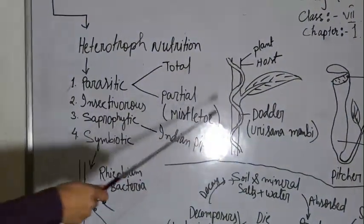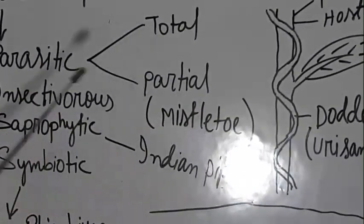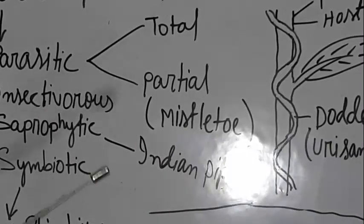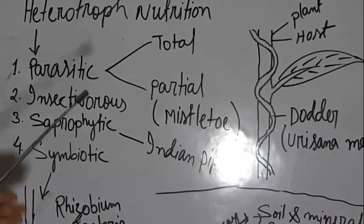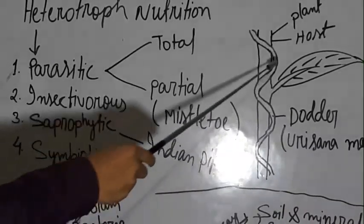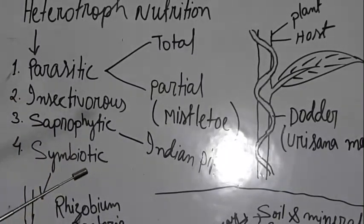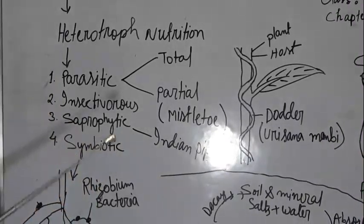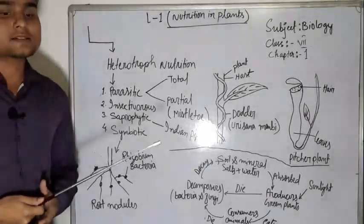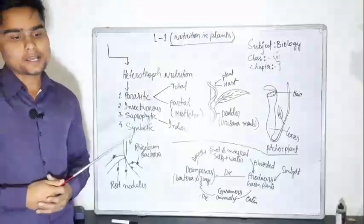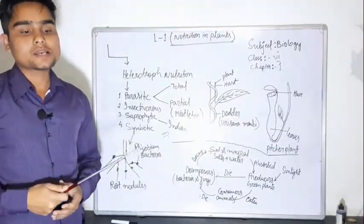This is the total parasite. There are plants with green leaves that have food prepared through photosynthesis. We have water and minerals from host plants. An organism that gets its nutrients from other living organisms is called a parasite. That kind of nutrition where organisms obtain nutrients from other living organisms is called parasitic nutrition.